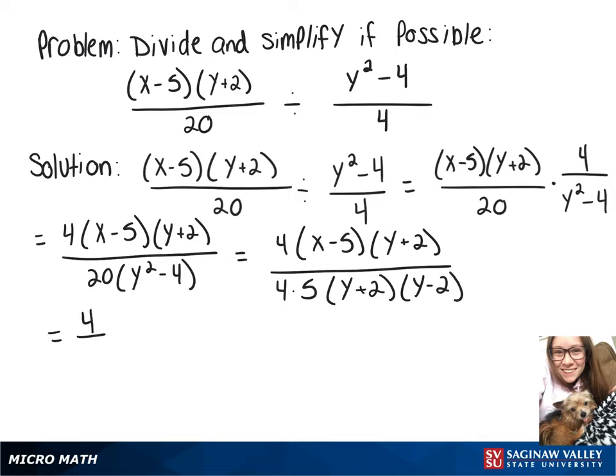To simplify we can rewrite that as 4 over 4 times y plus 2 over y plus 2 times x minus 5 over 5 times y minus 2. And now these parts will cancel out.